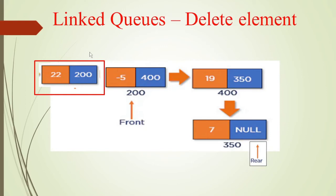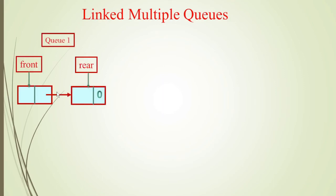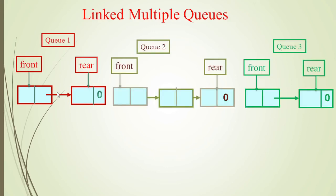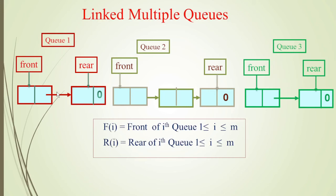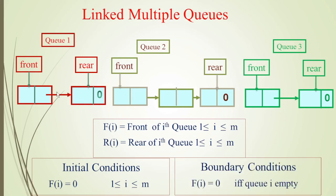Now we will see how to have multiple queues — linked queues. With the first queue you have a front and rear pointer. Second queue has front and rear pointer. Third queue, and so on — you can have any number of queues as long as you have a free node. F of I is the i-th queue front, R of I is the i-th queue rear. The initial condition is f of I equal to 0, meaning front points to 0, and that is the boundary condition also. If the queue is empty, f of I is equal to 0.